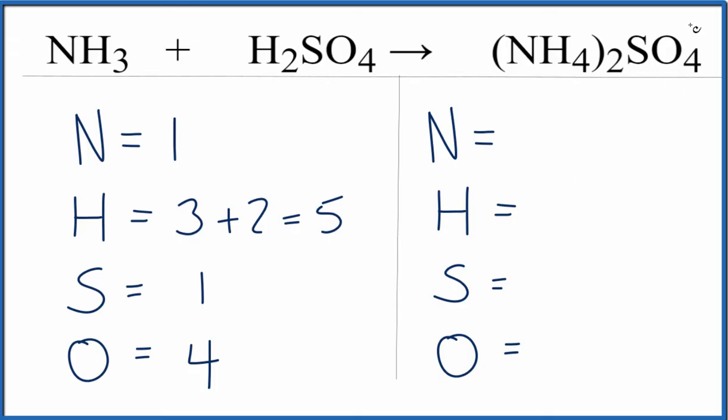Over on the product side, we've got to do some work here. The two times the one, that gives us two nitrogens, two times the four, we have eight there, and then we have one sulfur and four oxygens.